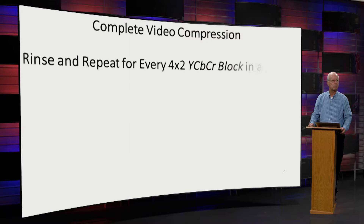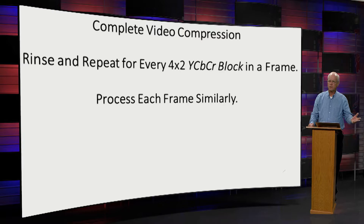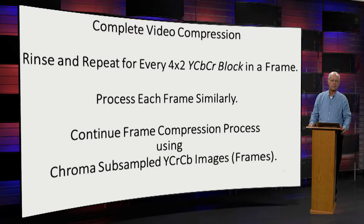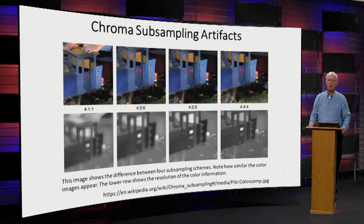We've prepared our data and shove it into the rest of the compression steps, doing this for every block. Each frame gets processed similarly using YCbCr on a frame basis. Here are pictures from Wikipedia showing various subsampling strategies — the top row shows the color pictures, which are pretty much alike, but you can see a great difference in what was thrown out in the chroma from the bottom set of pictures.